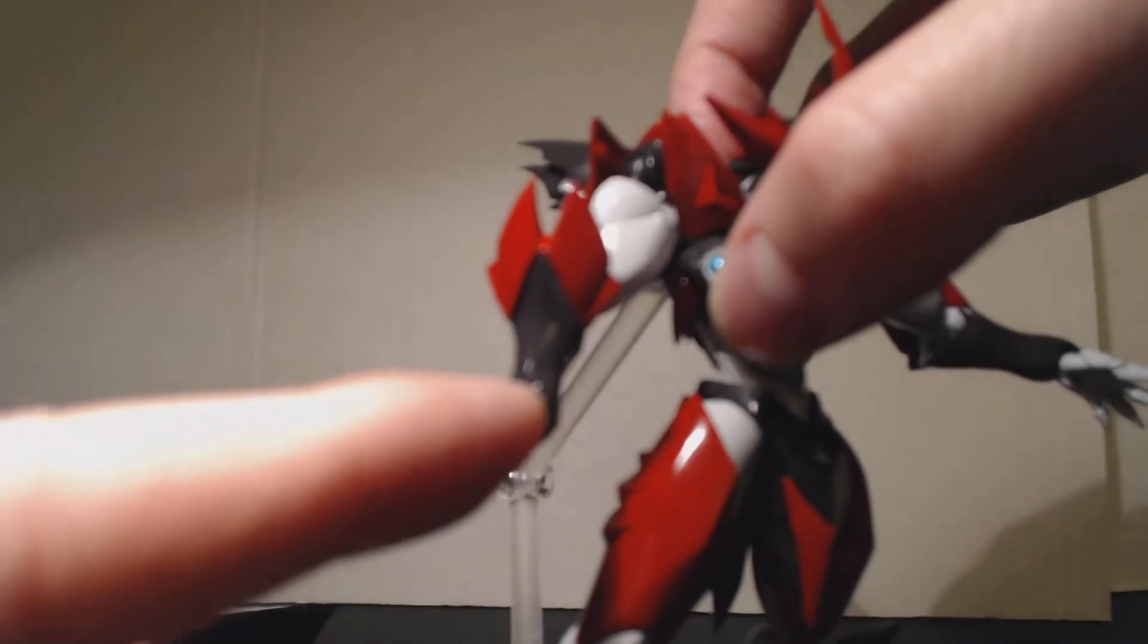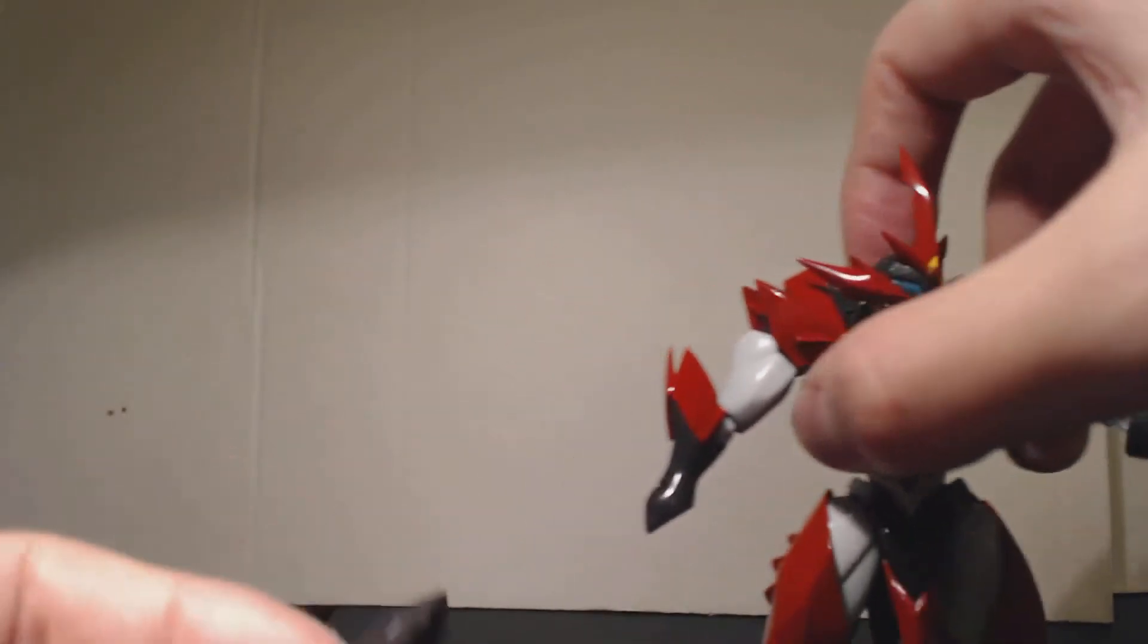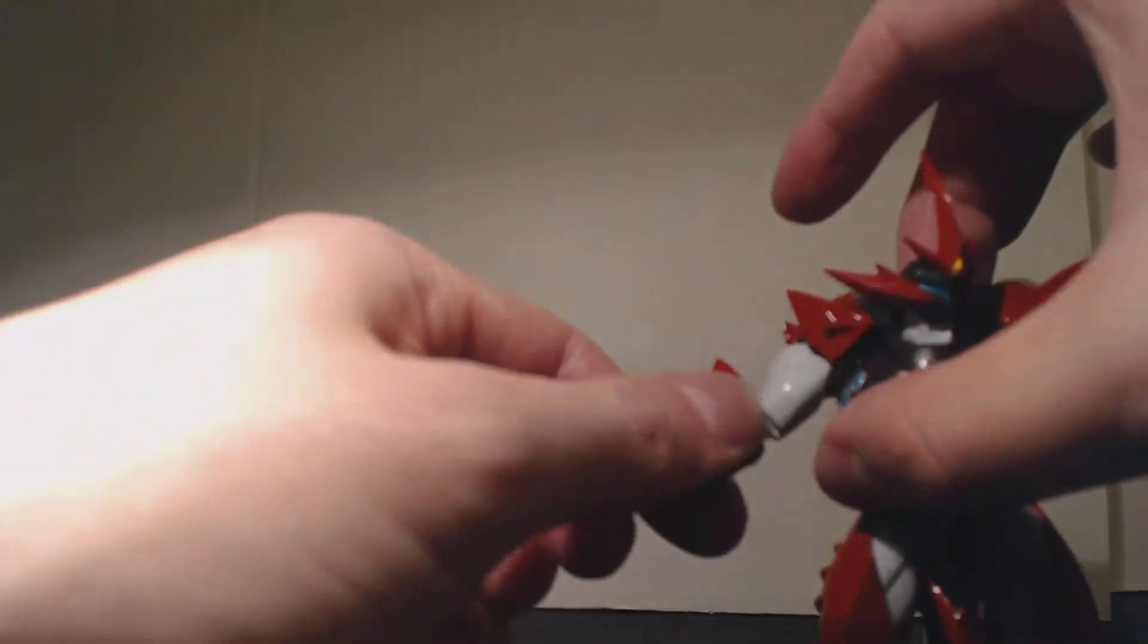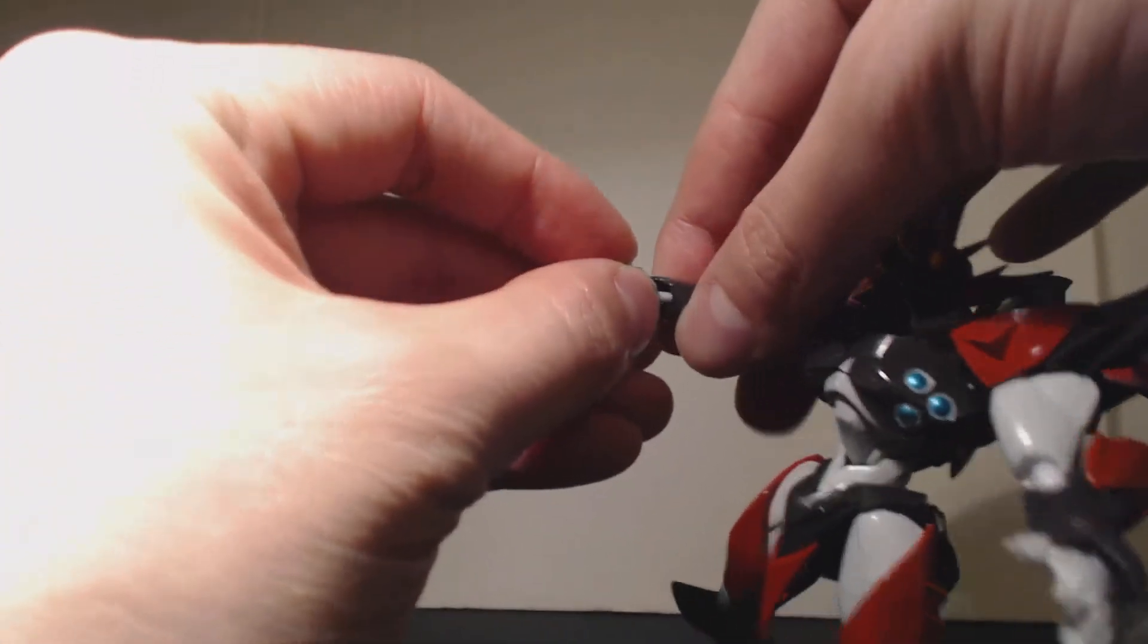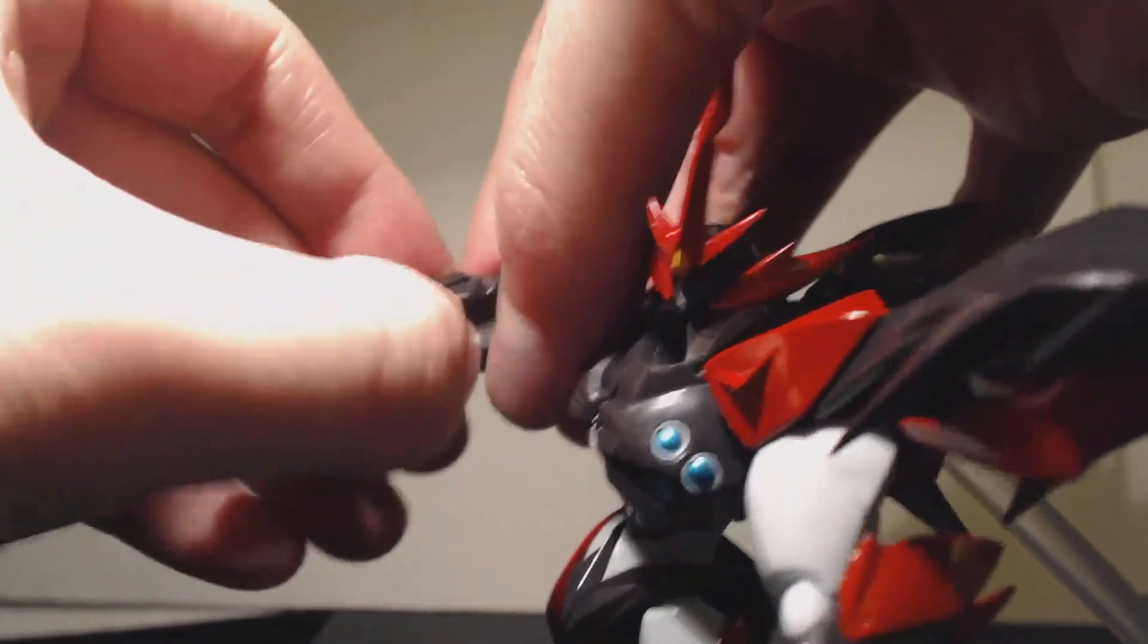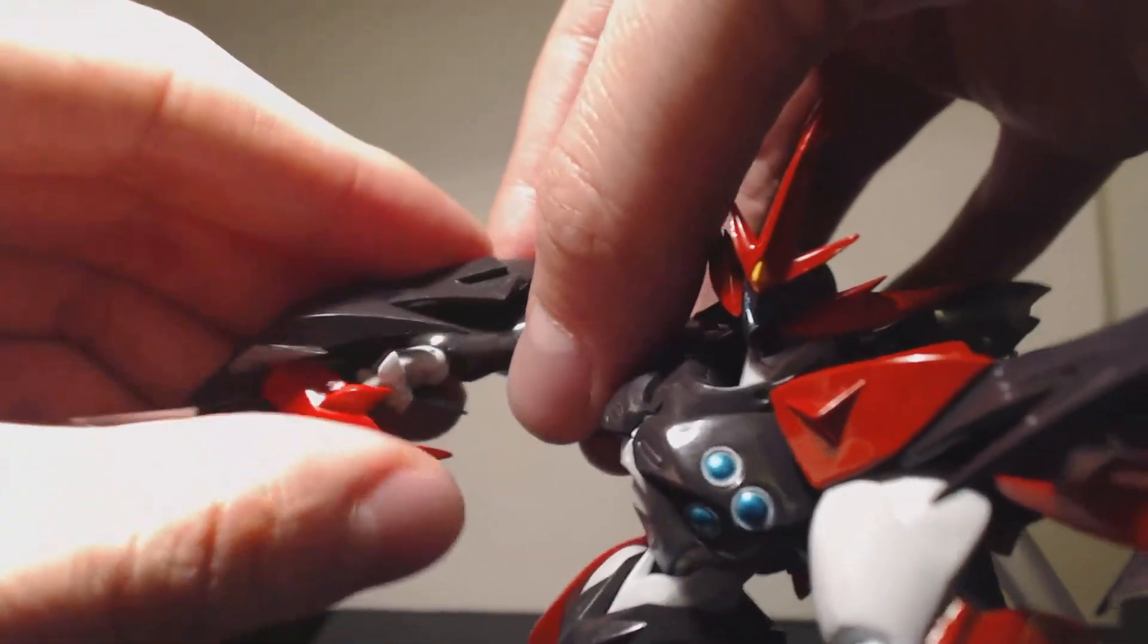And you can peg the blade onto it. Let me just show you. For example, I'm just going to put an arm so it's easy to see. So this here goes onto the peg hole on the arm and just kind of pegs in like so.